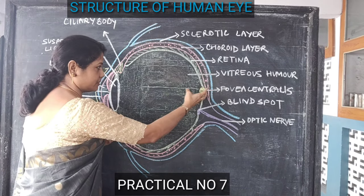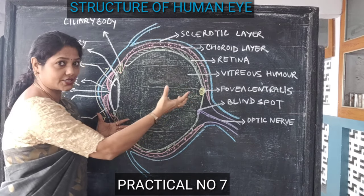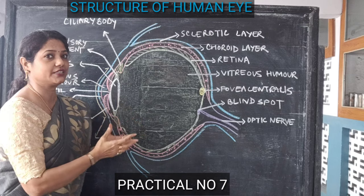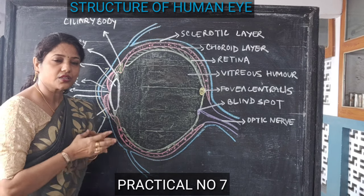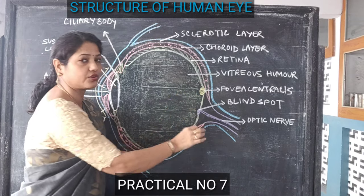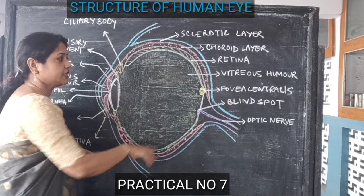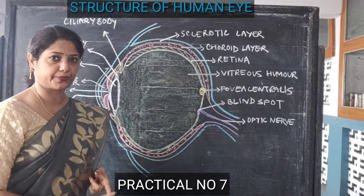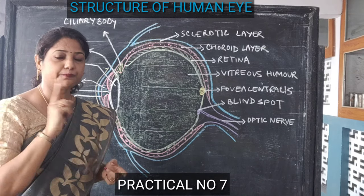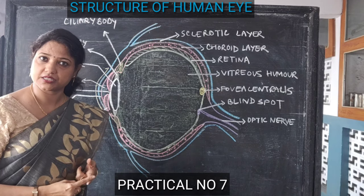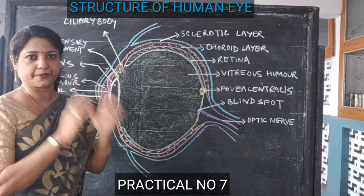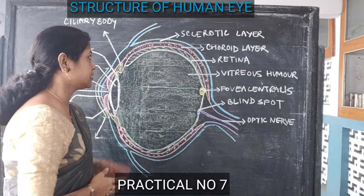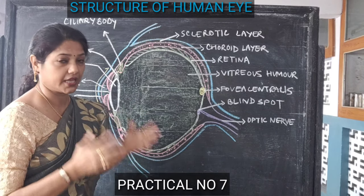When the image is formed, it produces light energy, and that light energy produces some chemical changes. Those chemical changes finally produce nerve impulses. Those nerve impulses, through the optic nerves — to which all the cone cells and rod cells are connected — merge together and the image is transmitted to the brain, to the optical centre of the brain. The brain interprets the image and helps us to see the object. Even if the image is formed inverted, the brain interprets it in an upright manner.